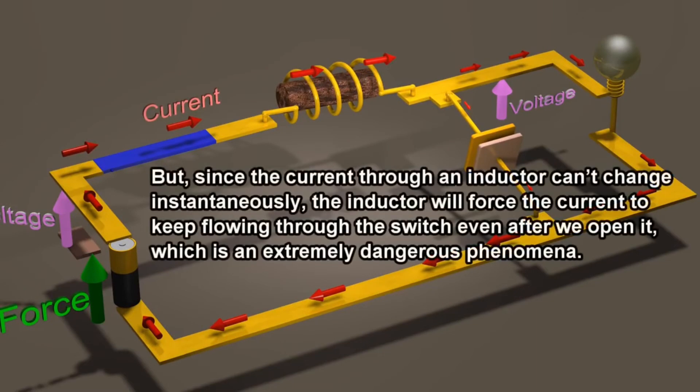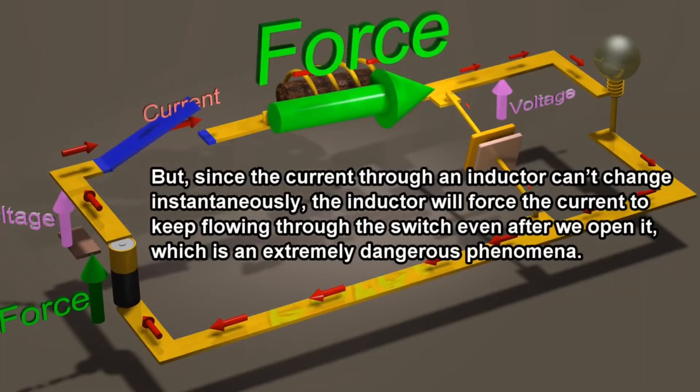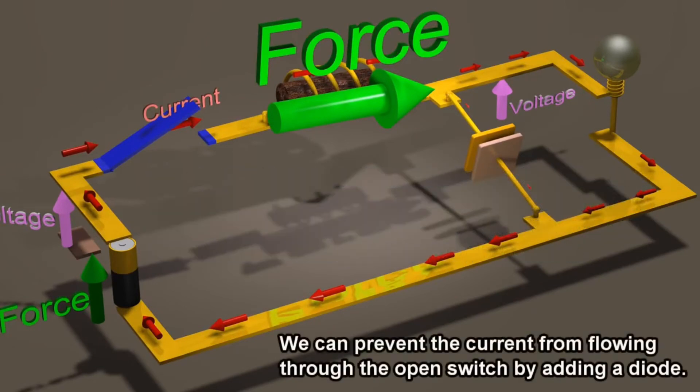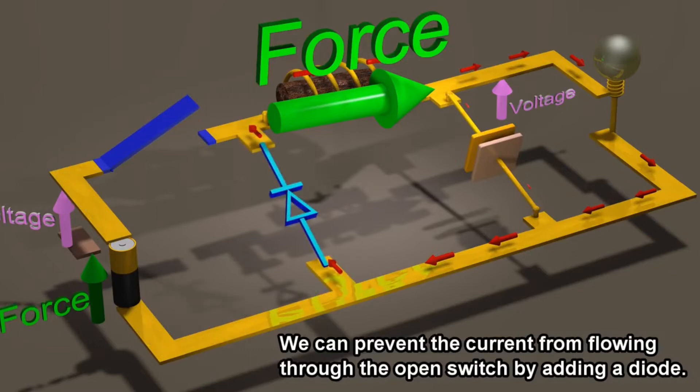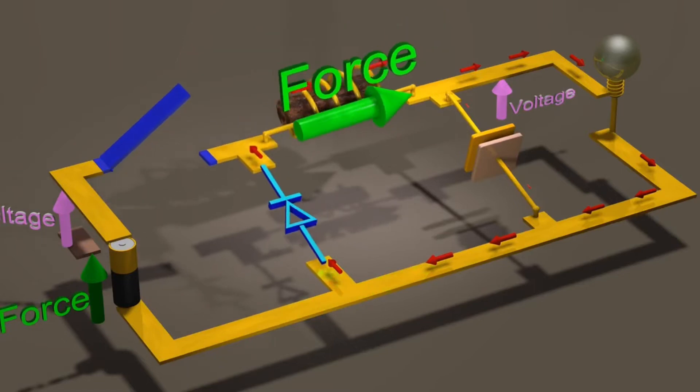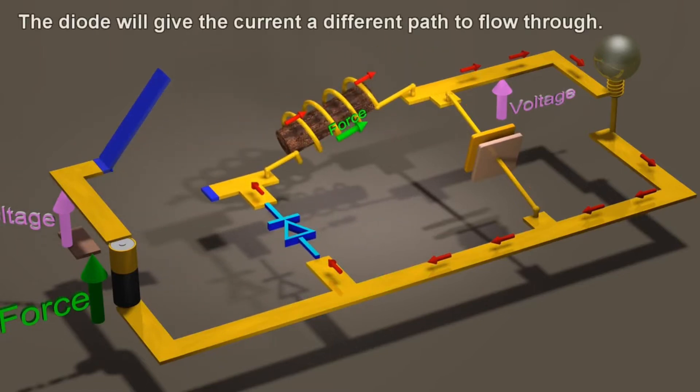But, since the current through an inductor can't change instantaneously, the inductor will force the current to keep flowing through the switch even after we open it, which is an extremely dangerous phenomenon. We can prevent the current from flowing through the open switch by using a diode. The diode will give the current a different path to flow through.